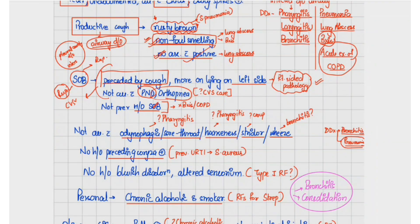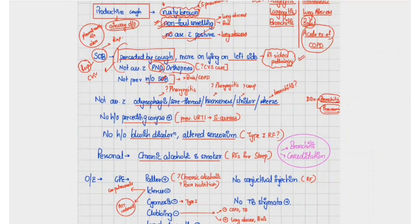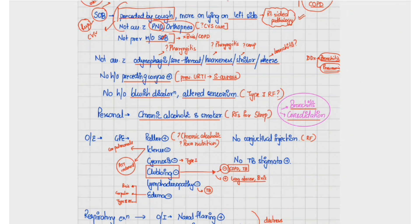There is no history of preceding coryza. As the cause is likely pneumonia or bronchitis, we should look for the organism. The rusty sputum suggests streptococcal pneumonia. The absence of prior upper respiratory tract infection makes Staph aureus less likely. No bluish discoloration of skin or altered sensorium means type 1 respiratory failure is less likely. The patient is a chronic alcoholic and smoker — both are important risk factors for streptococcal pneumonia.